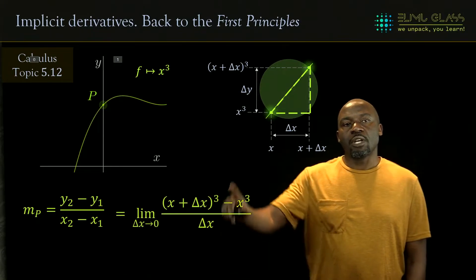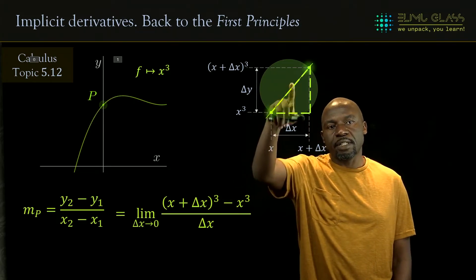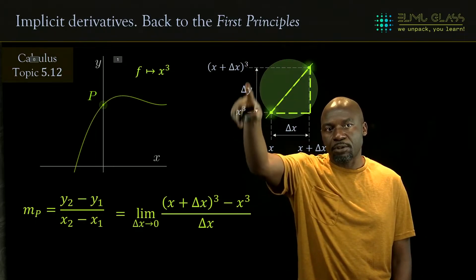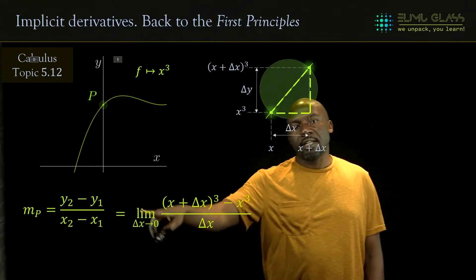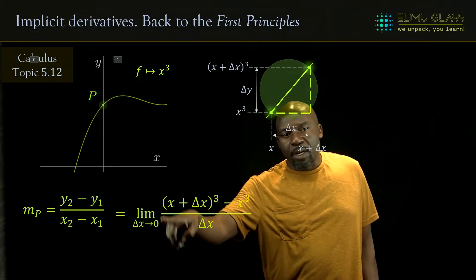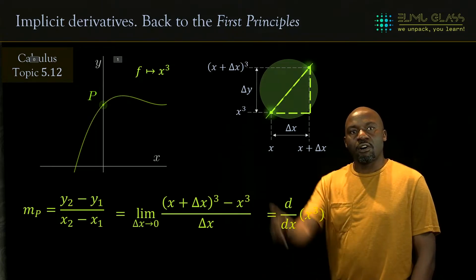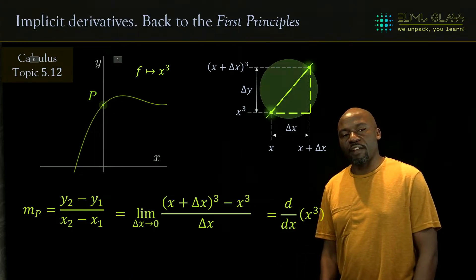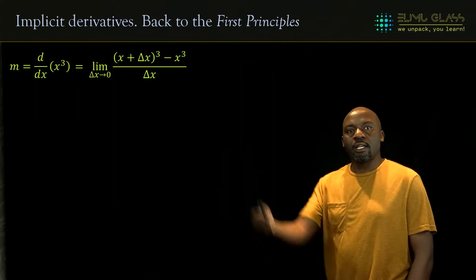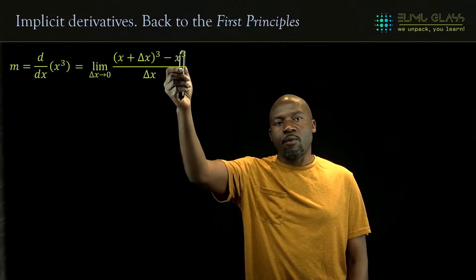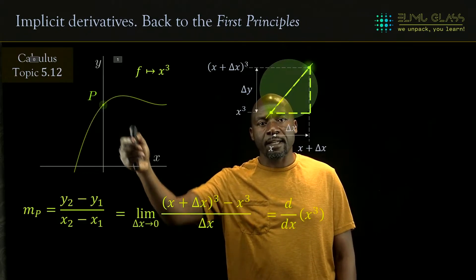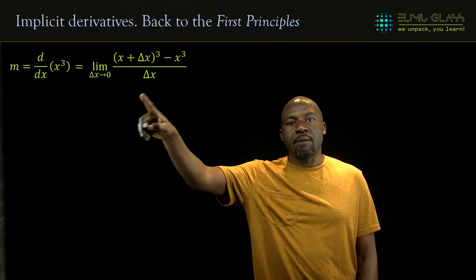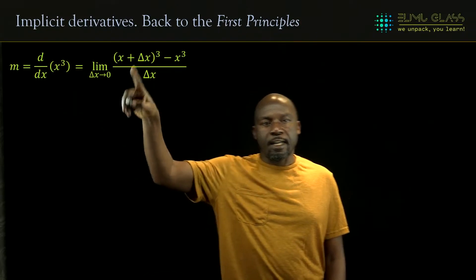The gradient is going to be the limit as delta x tends to zero — and of course delta y is also tending to zero as the diameter becomes smaller. So the limit as delta x and delta y tend to zero gives us the derivative of this function at point P. By substituting y2 and y1, and noting that x2 minus x1 gives us delta x, we can determine the gradient of x cubed at point P.